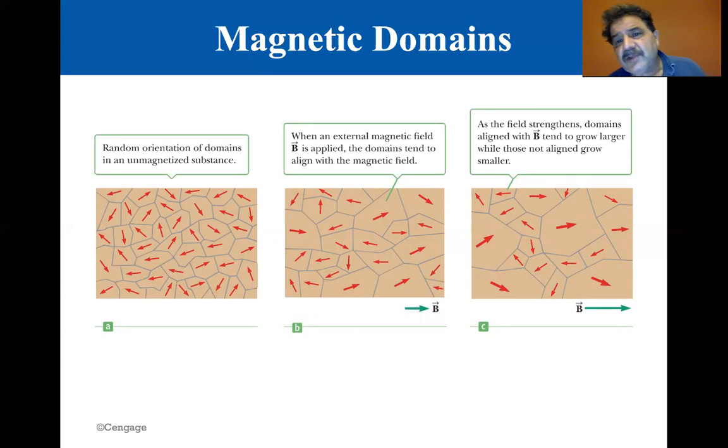As the field strengthens, domains aligned with B tend to grow larger, while those not aligned grow smaller. And you can see all of the arrows that are pointing in the B field, the green field to the right.